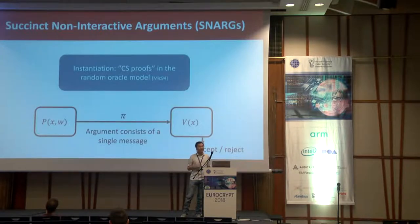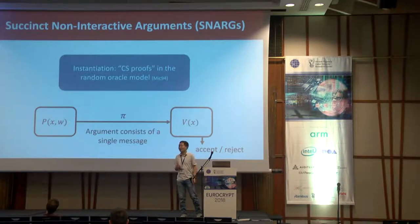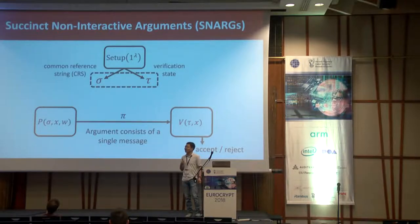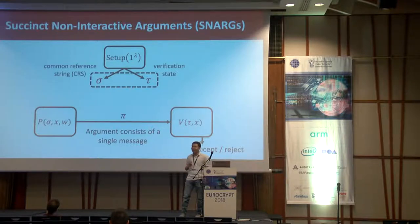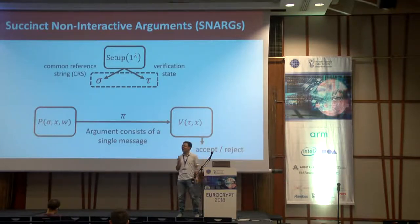There are many instantiations of succinct non-interactive arguments. For instance, Micali's celebrated computationally sound or CS proof gives one such instantiation in the random oracle model. Alternatively, we can consider the common reference string model, where we assume the existence of a trusted setup algorithm that generates a common reference string σ and a verification state τ. In the CRS model, the prover algorithm is defined with respect to the common reference string and the verification algorithm with respect to the verification state.